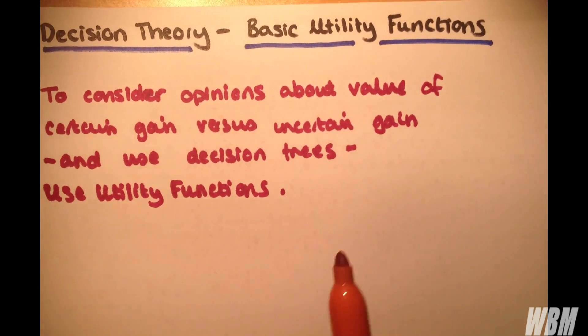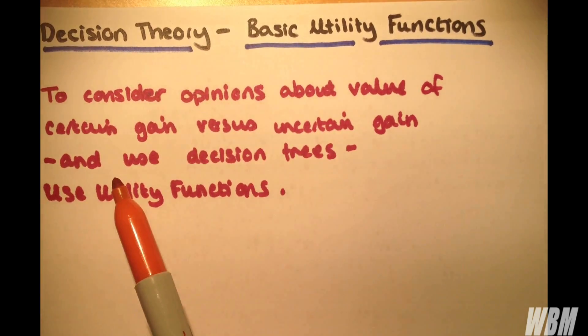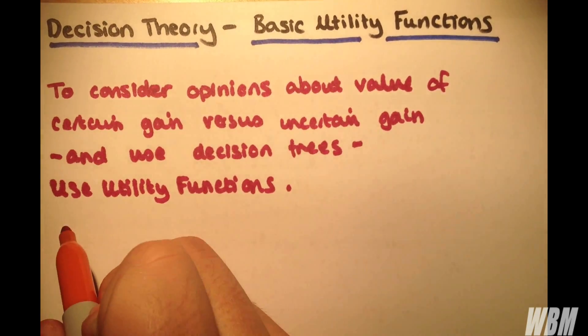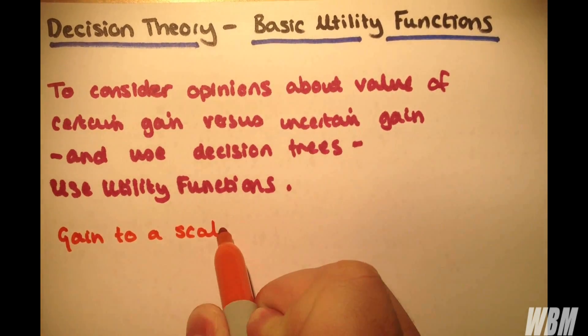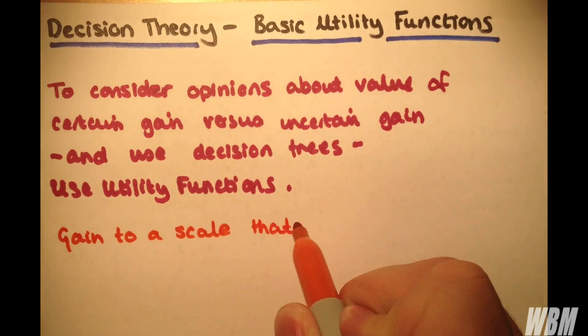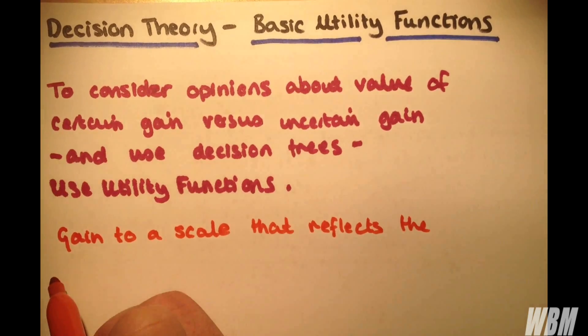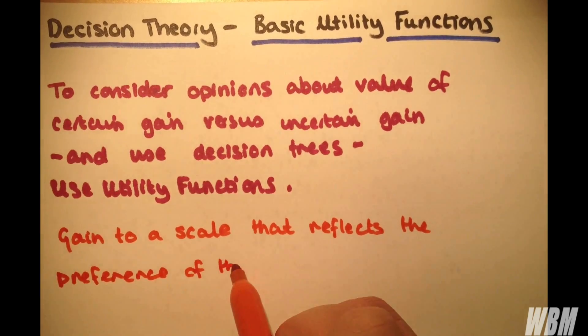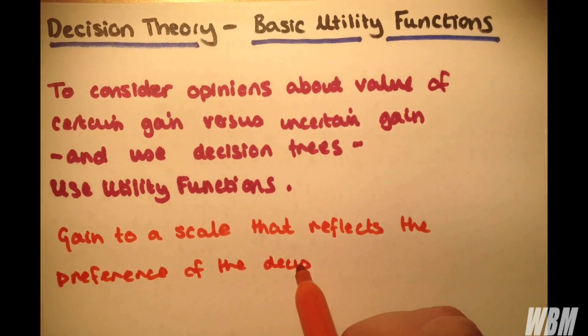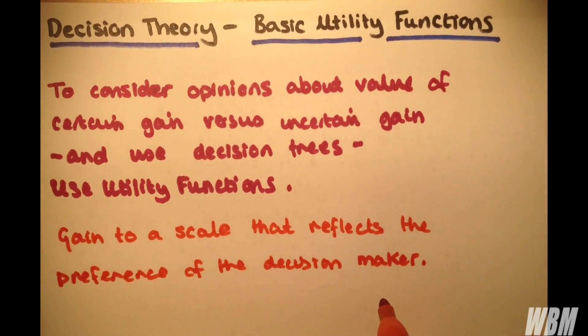When you want to consider opinions about value of certain gain versus uncertain gain and to use decision trees, we can use utility functions. They transform gain to a scale that reflects the preference of the decision maker. That's very important. So we can take into account what kind of person you are.